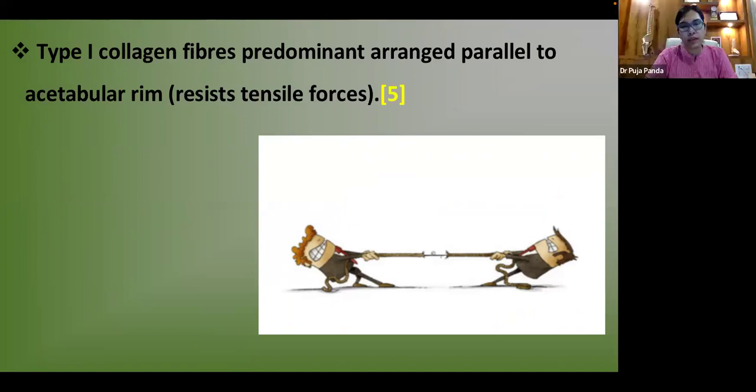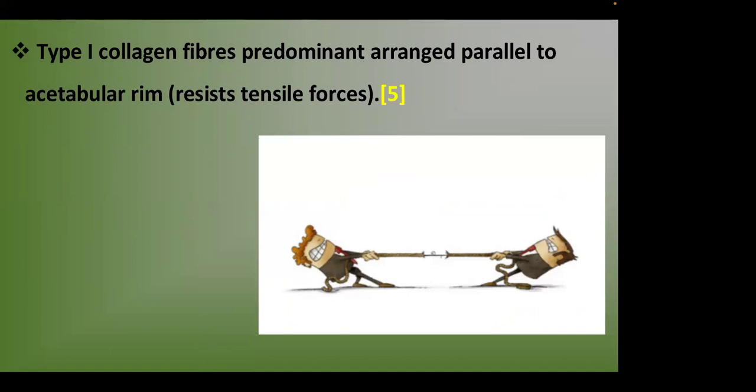The labrum is primarily formed of type one collagen fibers arranged parallel to the acetabular rim. The main function of these collagen fibers is to resist tensile forces.